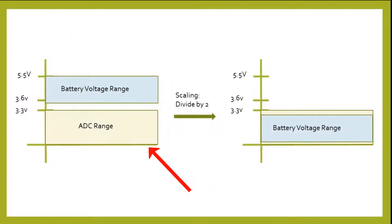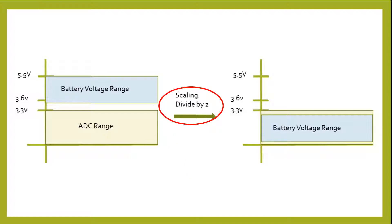Our ADC voltage range is from 0 to 3.3 volts. Our battery voltage will range somewhere between 3.6 and 5.5 volts depending on the state of charge. So even the minimum battery voltage would be outside our range. To deal with this, the Wild Logger has extra circuitry for the battery sensing to scale the battery voltage going into the ADC by 1.5. This allows us to fit neatly into the range of our ADC.